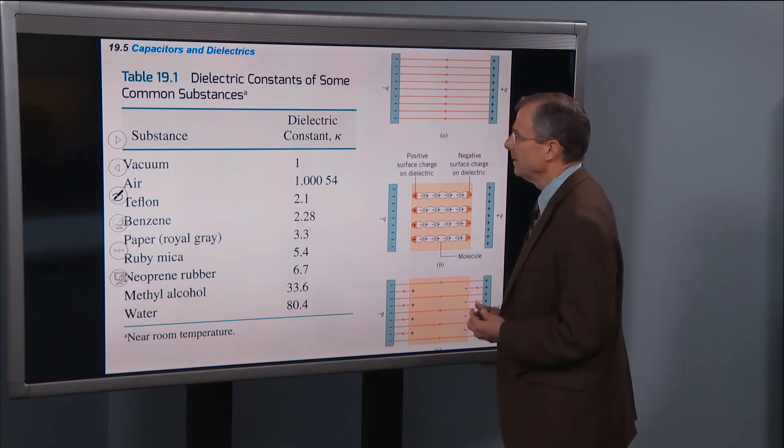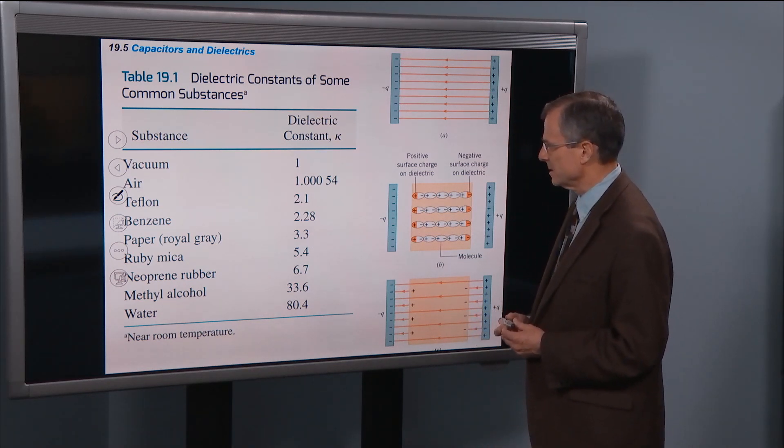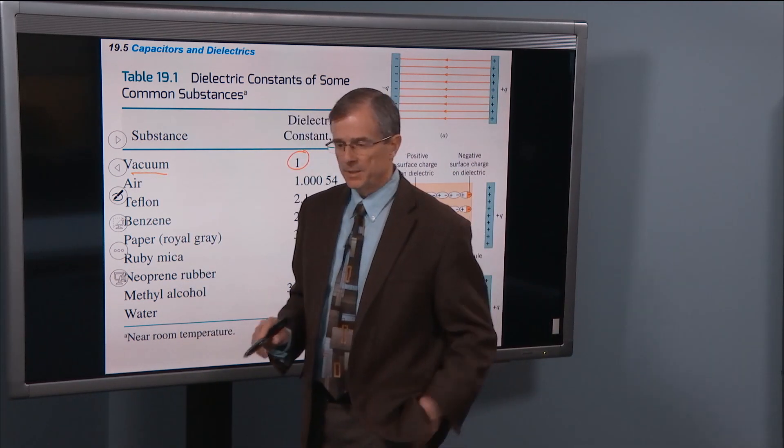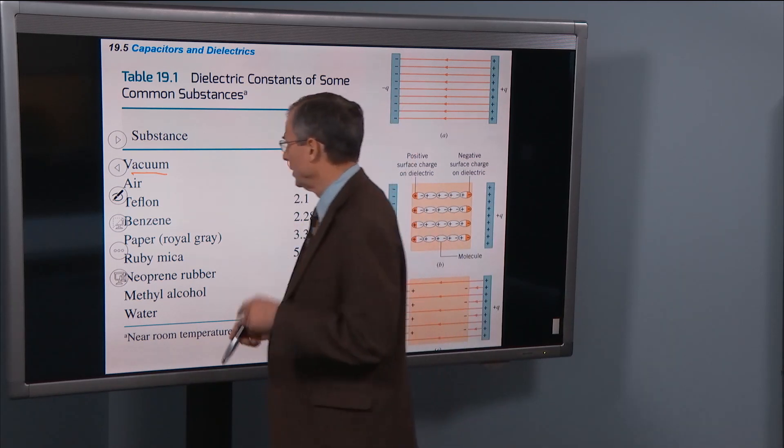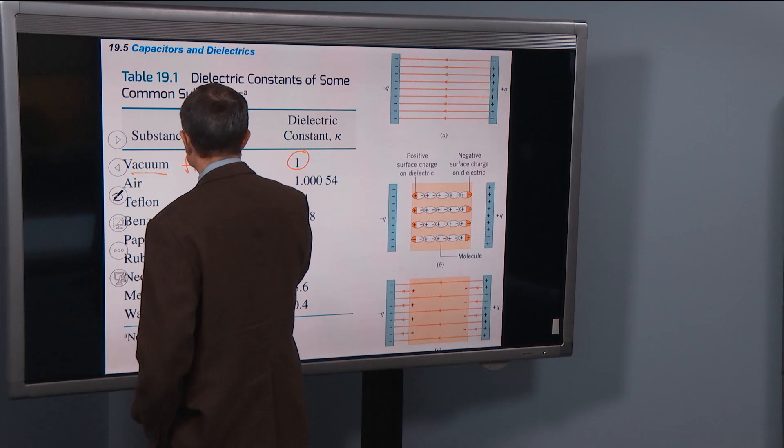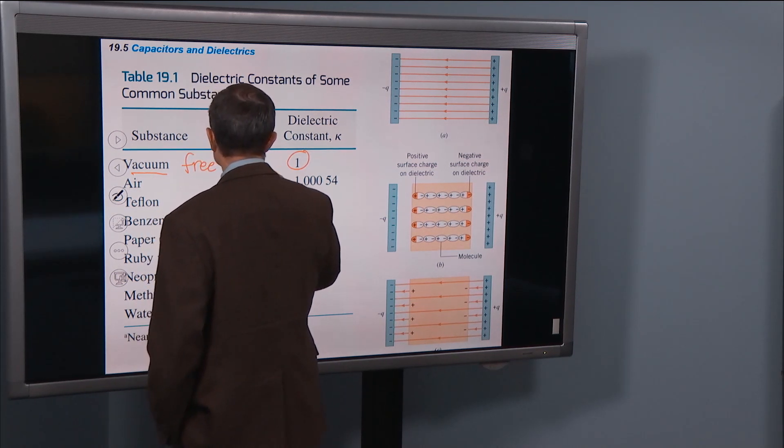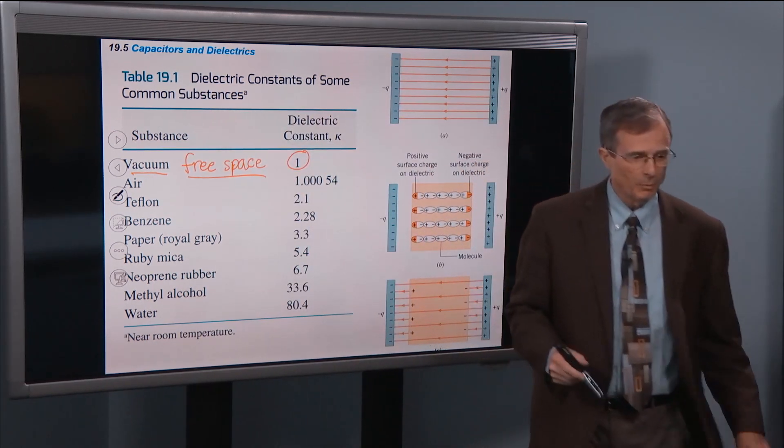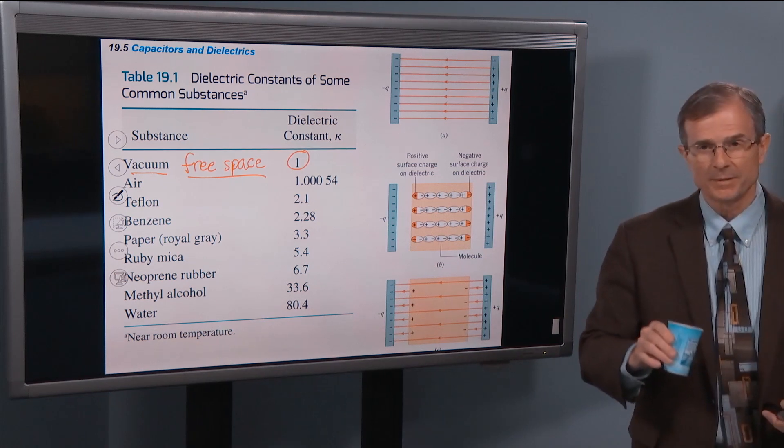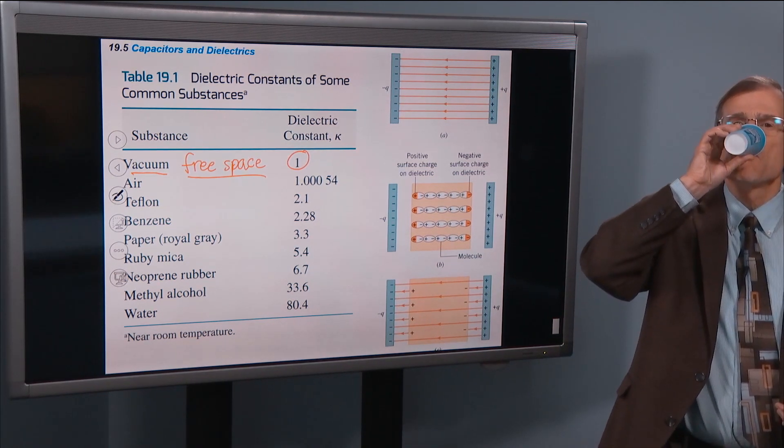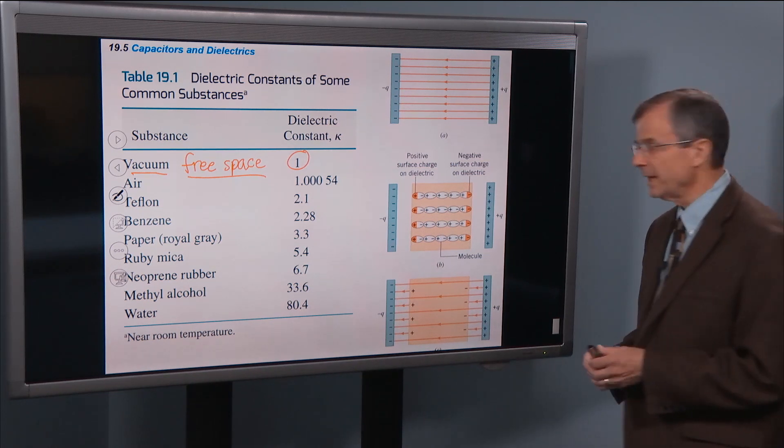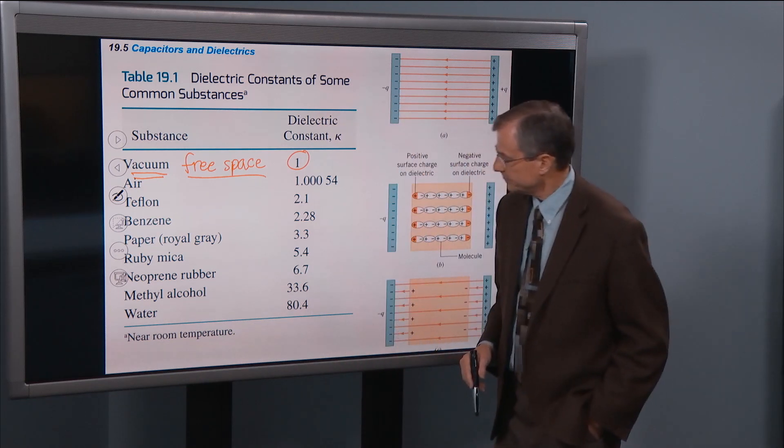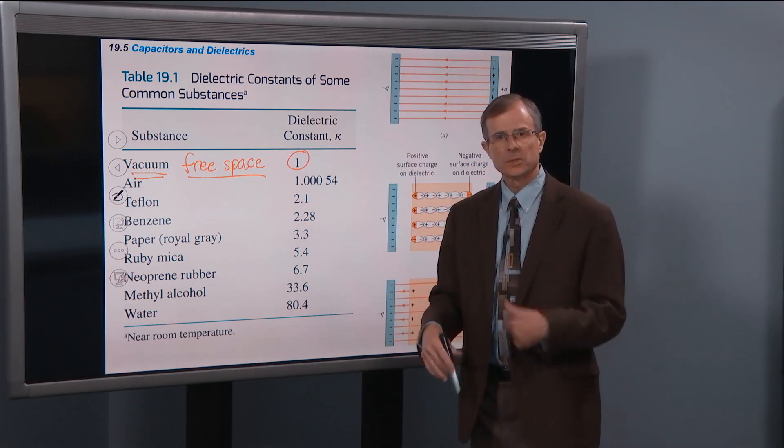Here's some dielectric constants of some common substances. The dielectric constant kappa for vacuum. What does vacuum mean? Is it the thing you vacuum your carpet with? No, it's just free space with nothing in it. And that makes sense that kappa should be one for free space because there's nothing there. There's no insulator there.